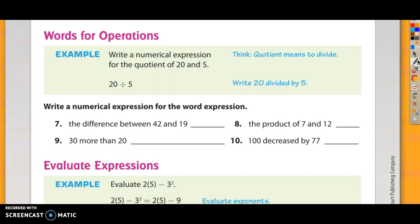The difference between 42 and 19 means 42 minus 19. The key here is that I know that difference is a subtraction problem. Product, more than, and decrease tell you what the operations are. So number eight, the product of 7 and 12 means write 7 times 12. I want you to know what product means. More than means add. 30 more than 20 means I add 20 and 30. And number 10, 100 decreased by 77 means 100 minus 77. You don't have to solve those, we're just writing the numerical expressions.